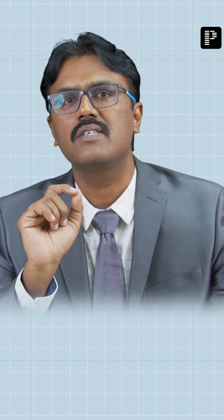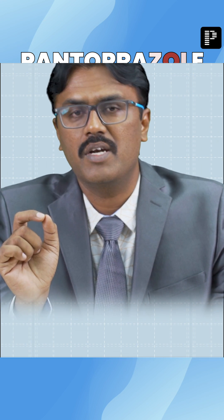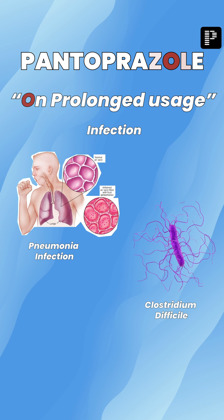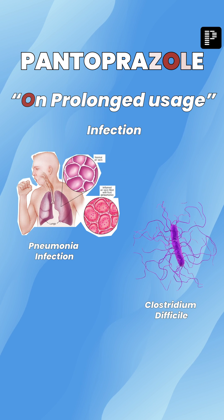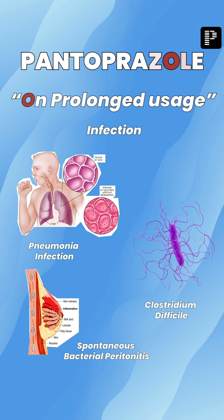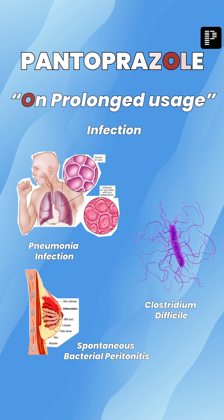The next letter is O — on prolonged usage, there is a risk of infections, particularly pneumonia, infection by Clostridium difficile, and also spontaneous bacterial peritonitis in certain patients. Because when you elevate the pH in the stomach, there is a risk of infection going up.